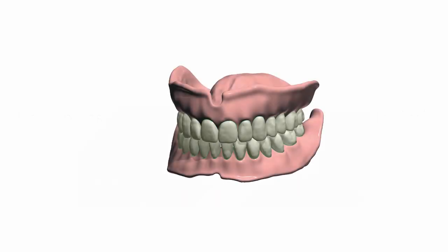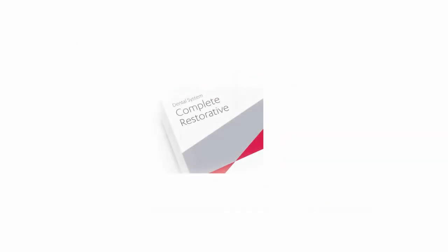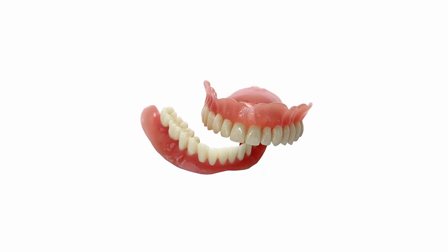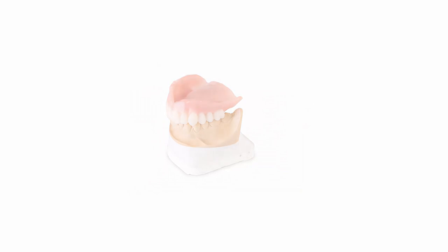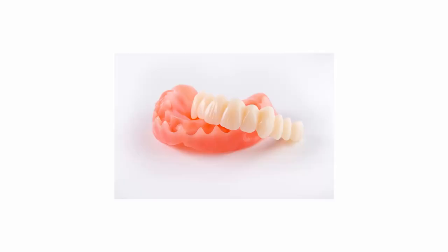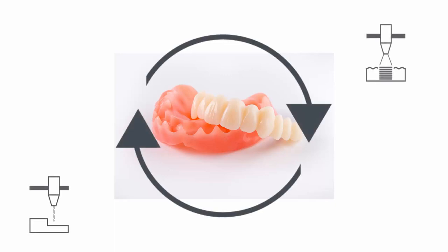While watching this video you will learn how to design and prepare for production a full denture with teeth connected in one block. The 3-Shape dental system enables you to design a full denture in multiple configurations. You can design both the upper and lower denture at the same time or work on a single denture only. While making the design you can decide to connect all teeth in one block and later produce the denture by milling, printing, or a combination of both methods.